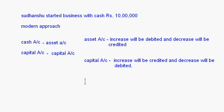Here, for the business, cash is increasing when it comes into the business. Increase in an asset account is debited, so we write cash account debit. Capital is also increasing — when the proprietor brings in cash into the business, that is capital. The capital account of the proprietor was initially 0; now it is 10 lakh. So capital account is also increasing, and increase in capital account is to be credited. So we write to capital account.